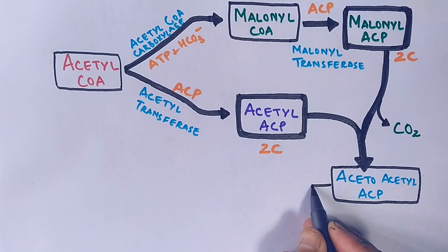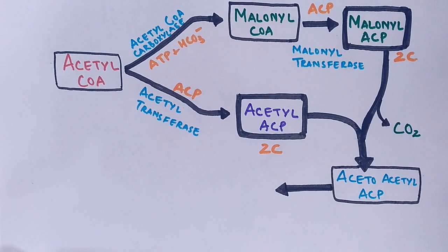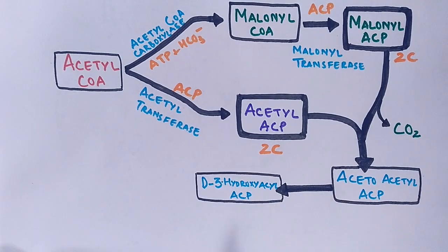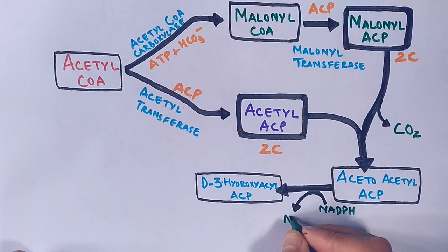And then after, we have the fifth step: the reduction process. In the reduction process, the acetoacetyl-ACP is converted to D-3-hydroxyacyl-ACP when it gets reduced by NADPH.